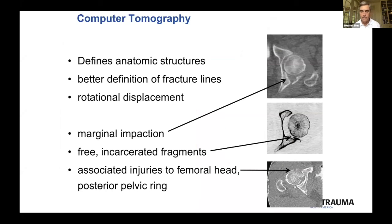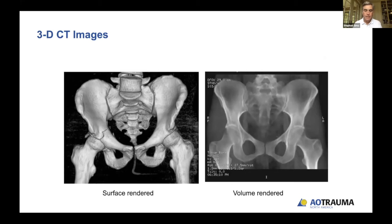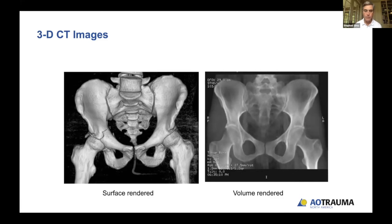The CT scan is an essential portion of the workup in today's world. It gives us better definition of the fracture patterns and the displacements, is very nice to show marginal impaction, can show free incarcerated fragments, and shows us other injuries around the pelvis — including femoral head injuries. The 3D surface-rendered and volume-rendered images have been very helpful in understanding acetabular fractures. If you really want to get the most out of these, spend some time in the radiology department — they can delete the femoral heads, a hemipelvis, or the sacrum, and you can rotate it to get a good look at what you have.